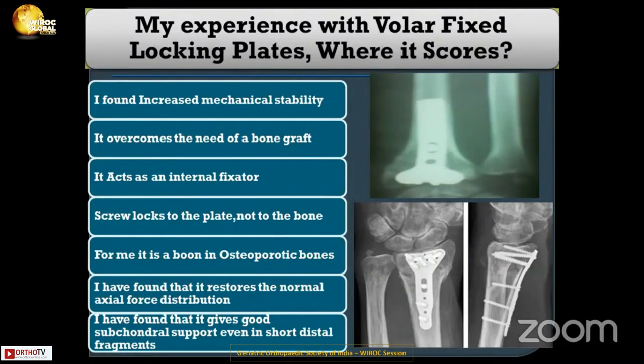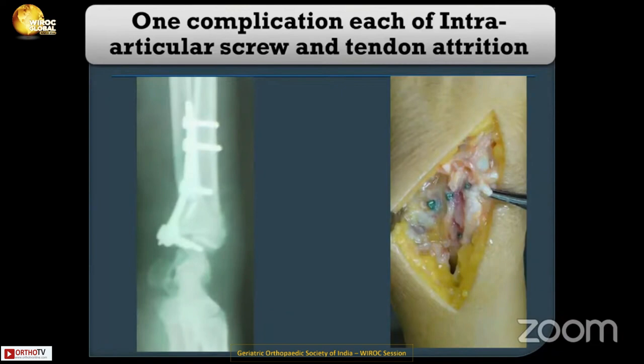Volar locking plates score highly in my patients: increased mechanical stability, overcomes the need for bone graft, acts as an internal fixator where the screw locks to the plate and not the bone. For me, it is a boom for osteoporotic bone. It restores normal axial force distribution and provides good support even in shorter distal fragments. I did encounter some complications, such as a screw within the joint and tendon attrition, but these were rare.